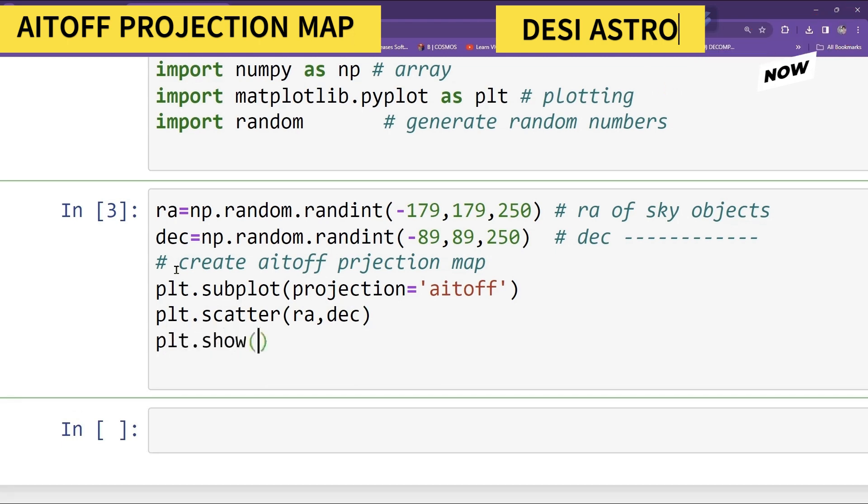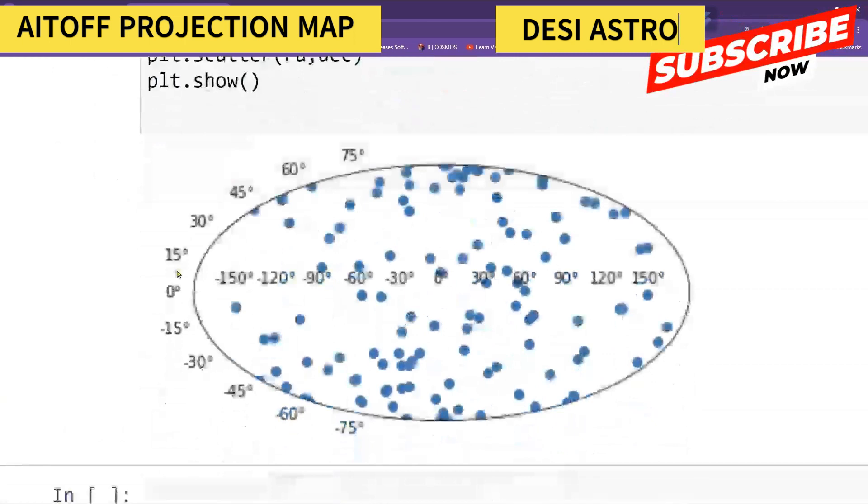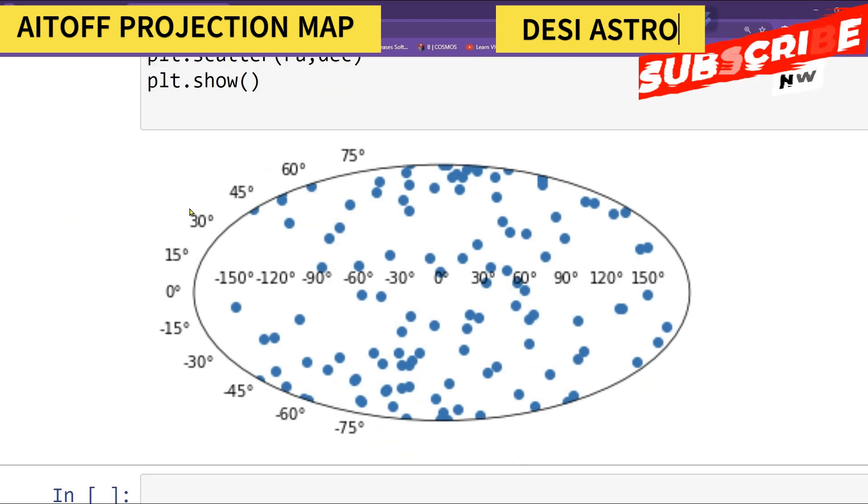Now run the code. So here you can see a very simple Aitoff position map. You can see this is your RA, this is your DEC.